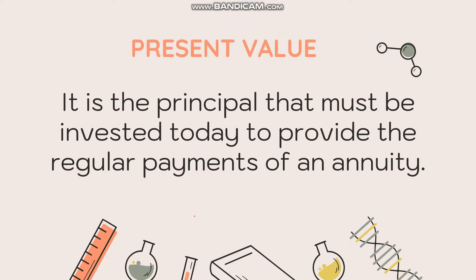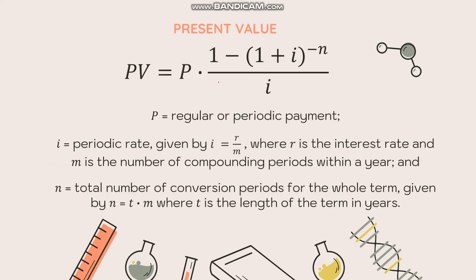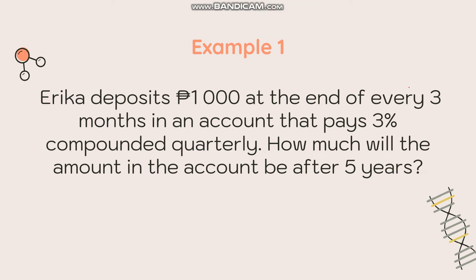We also have present value — the principal that must be invested today to provide the regular payments of an annuity. For example, to identify how much you can loan given that you can pay 5,000 pesos every month, you solve for present value. The formula is: PV = P × [1 − (1 + i)^(−n)] / i, where P, i, and n are the same as for future value.